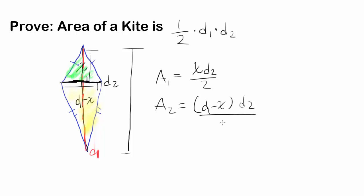So what's the area of a kite? Well, area of a kite is going to be the sum of this one and this one, because area of a kite is the sum of this triangle and this triangle. So, let's just add them up. So we have X D2 over 2 plus (D1 minus X) times D2 over 2.